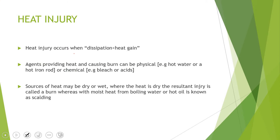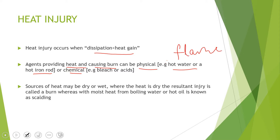Heat injury occurs when dissipation of heat is less than heat gain. According to the laws of thermodynamics, our bodies are in equilibrium with the environment. When absorption of heat exceeds the dissipation rate, burn injury will occur as temperature rises high enough to disrupt cellular processes. Agents that provide heat and cause burns can be physical or chemical. Physical agents include hot water or a hot iron rod, and flame is also physical. Chemical agents include things such as bleach or corrosive acids.